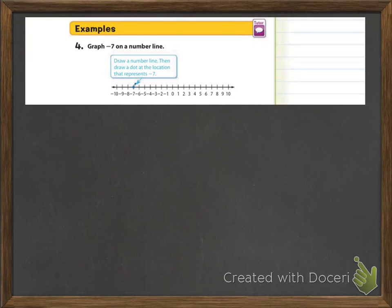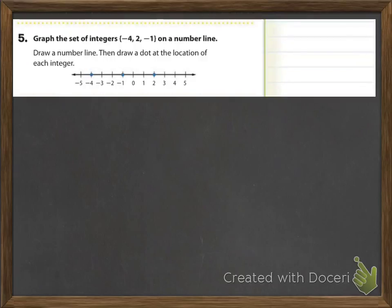To graph a point on the number line, draw a point at its location. A set of integers is written using braces — such as {2, negative 9, 0}. It says graph negative 7 on a number line, so you're just going to put a little dot right there on the negative 7. The next one says graph the set of integers negative 4, 2, and negative 1 — make sure you know where each one of those numbers can be found.